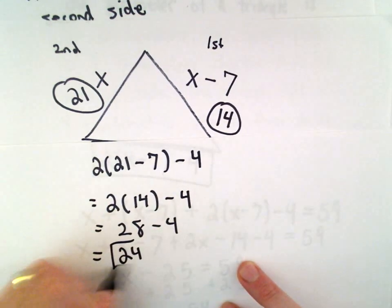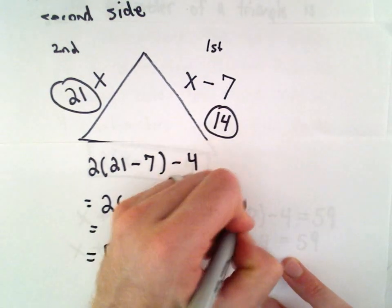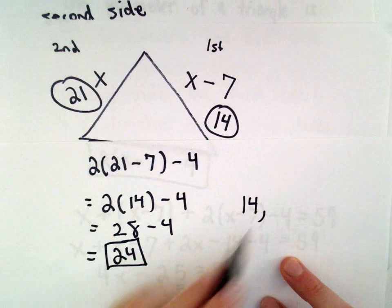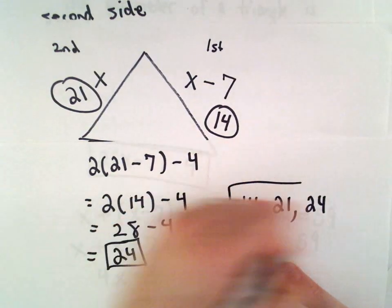So, it looks like the three lengths are, from smallest to largest, would be 14, 21, and 24.